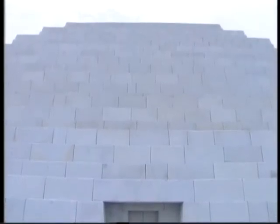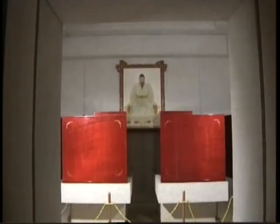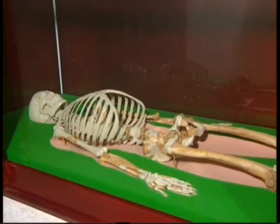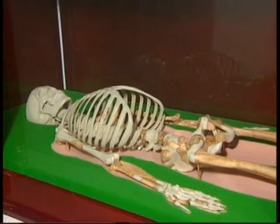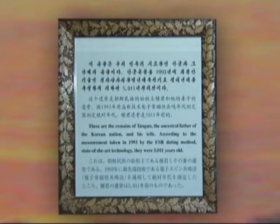The door to the burial room is on the back side of the Mausoleum. One enters the burial room of King Dangun through three doors: outer, middle, and inner. In the burial room are laid in state the remains of King Dangun and his wife. The remains were unearthed in February 1993. According to judgment at that time, the remains dated back to 5,011 years ago.